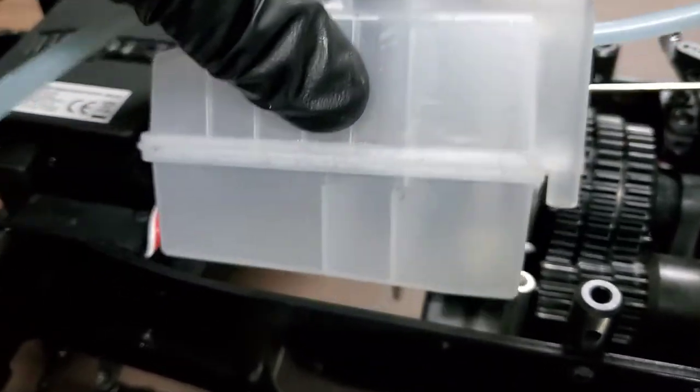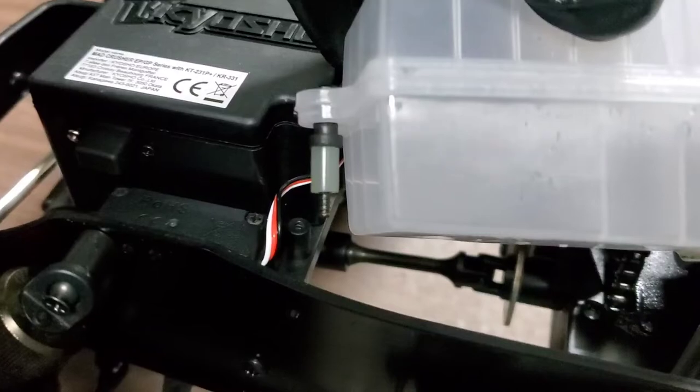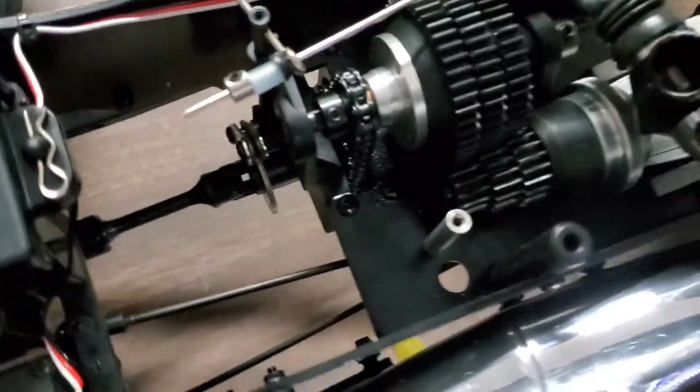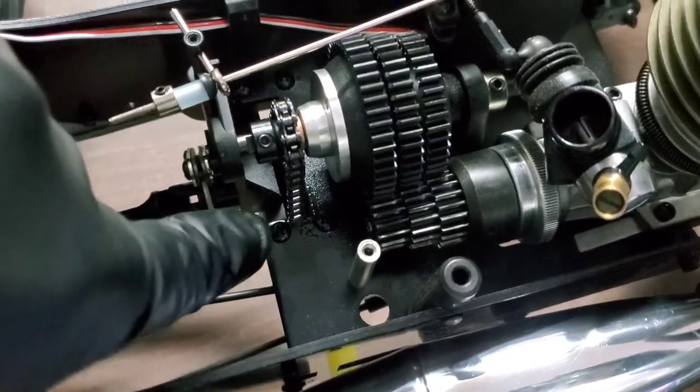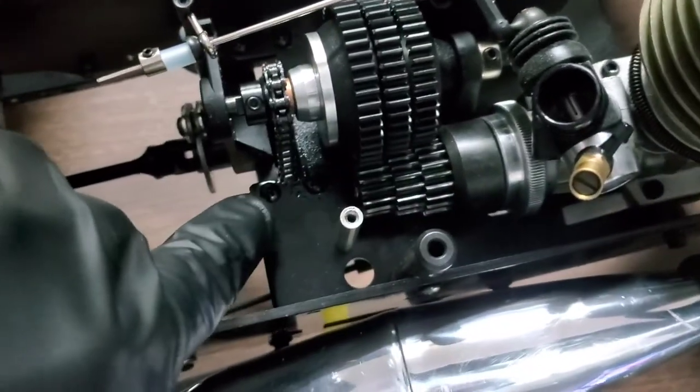When removing the fuel tank, take note of which side the rubber grommets go on. This side does have an extra little piece of fuel tubing. Once you've got the fuel tank off, you can get easier access to these two Phillips screws here and the other two there. Then you'll be able to remove the center differential.